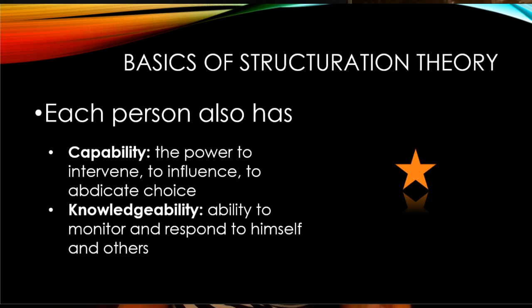According to Giddens' theory, each person also has capability and knowledgeability. Every person in a group has the power to act on, ignore, or change what they do in that group. Even if the structures tend to limit their behavior, they still have the choice — they are capable of choosing something else. He calls them reflective agents. Each person has the ability to reflect not only on their own behavior, but on everyone else's behavior as well, and make choices based on what they perceive.